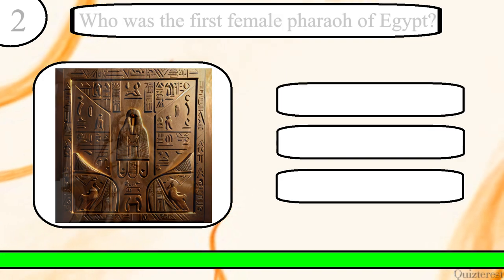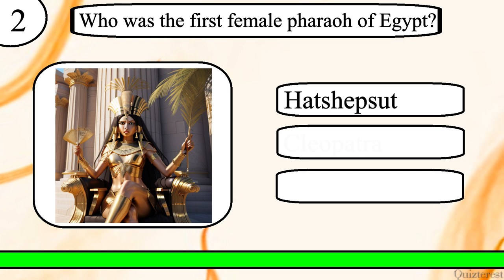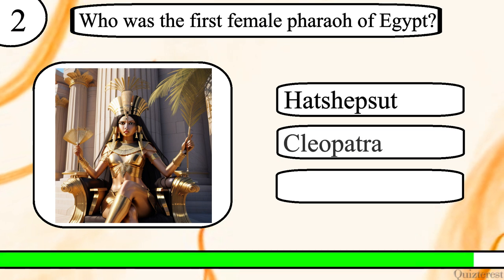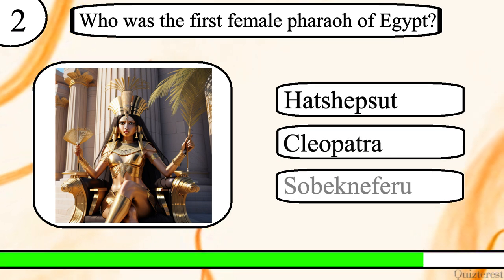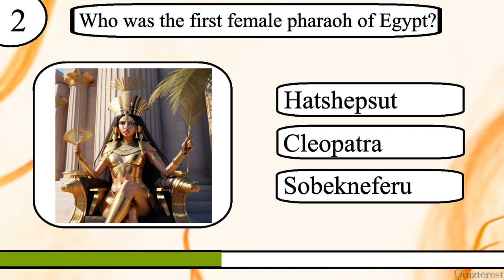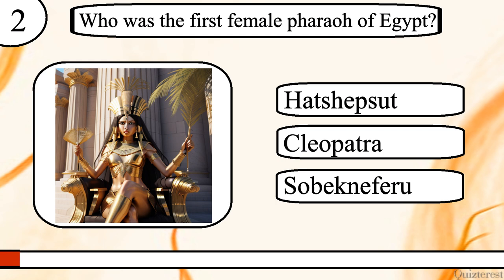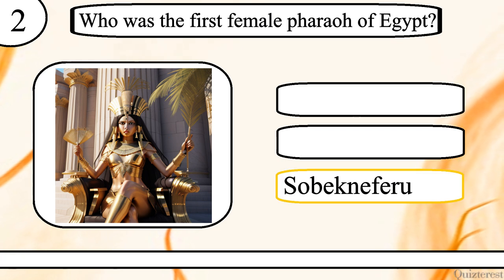Question 2. Who was the first female pharaoh of Egypt? Hatshepsut, Cleopatra or Sobekneferu? The correct answer is Sobekneferu.